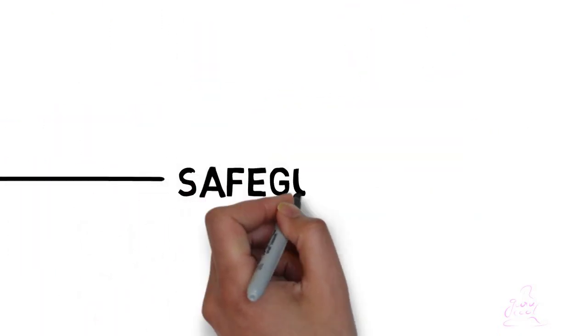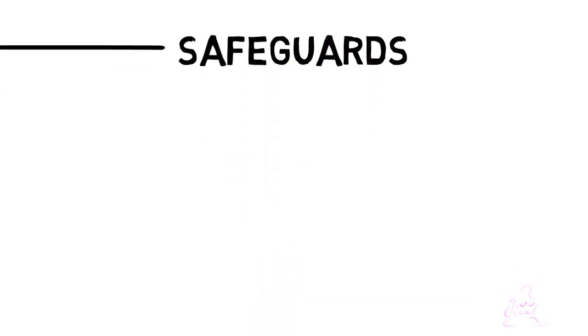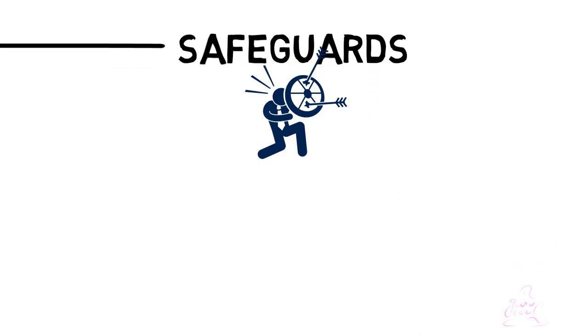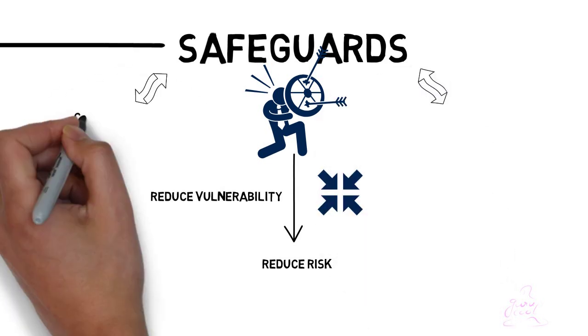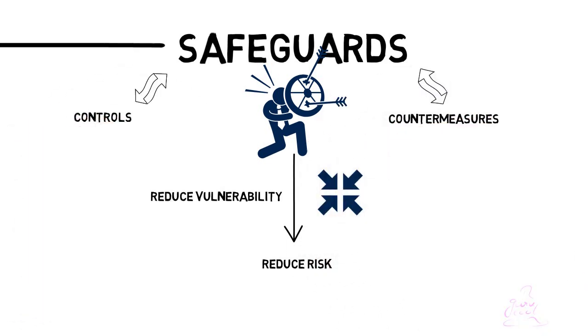We apply various kinds of safeguards, or what we call countermeasures, that can eliminate or reduce the vulnerability and thus reduce the risk. The terms such as controls, safeguards, and countermeasures are interchangeable. Basically, they are mechanisms put into place to reduce risk.